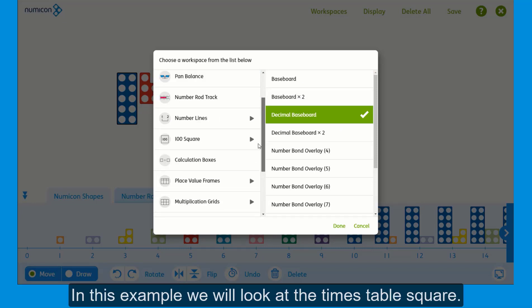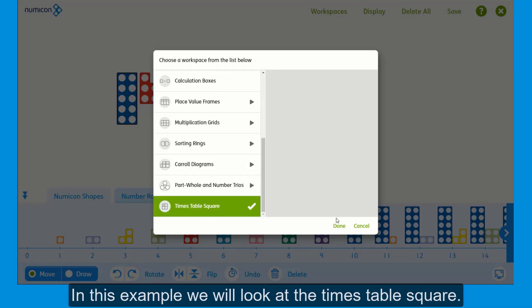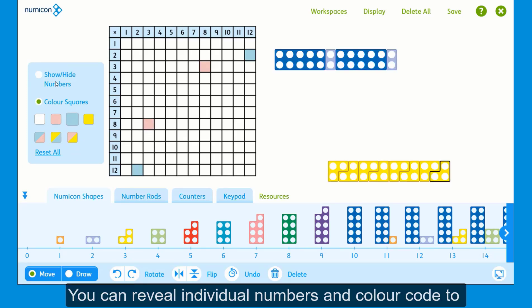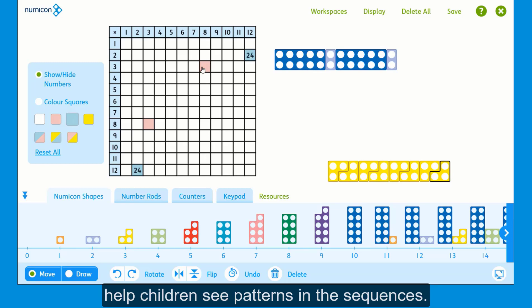In this example we will look at the times table square. Here is the times table workspace. You can reveal individual numbers and colour code to help children see patterns in the sequences.